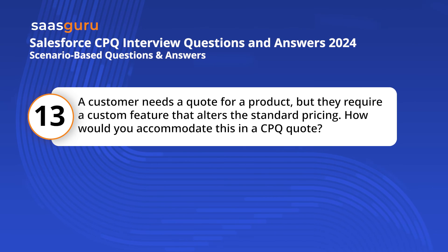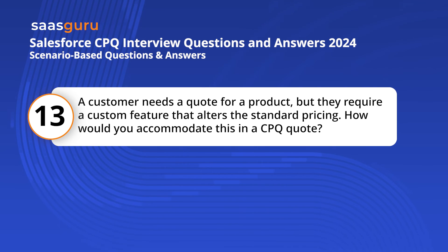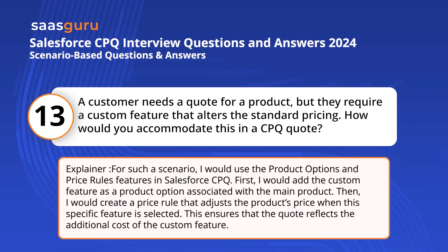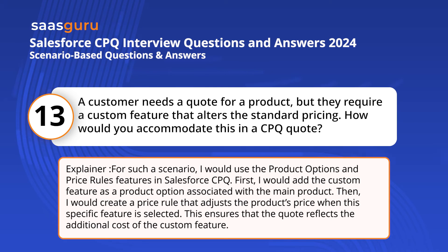Question 13. A customer needs a quote for a product, but they require a custom feature that alters the standard pricing. How would you accommodate this in CPQ? For such a scenario, I would use the product options and price rules features in Salesforce CPQ. I would add the custom feature as a product option associated with the main product, then create a price rule that adjusts the product's price when this specific feature is selected, ensuring the quote reflects the additional cost of the custom feature.